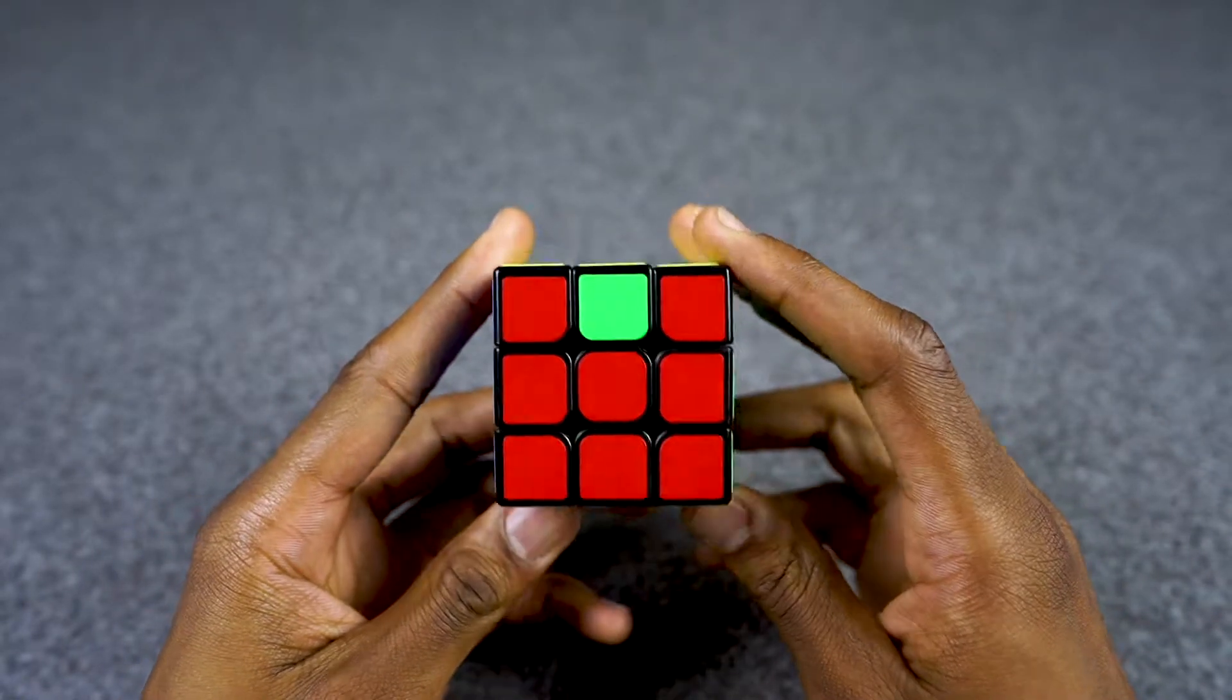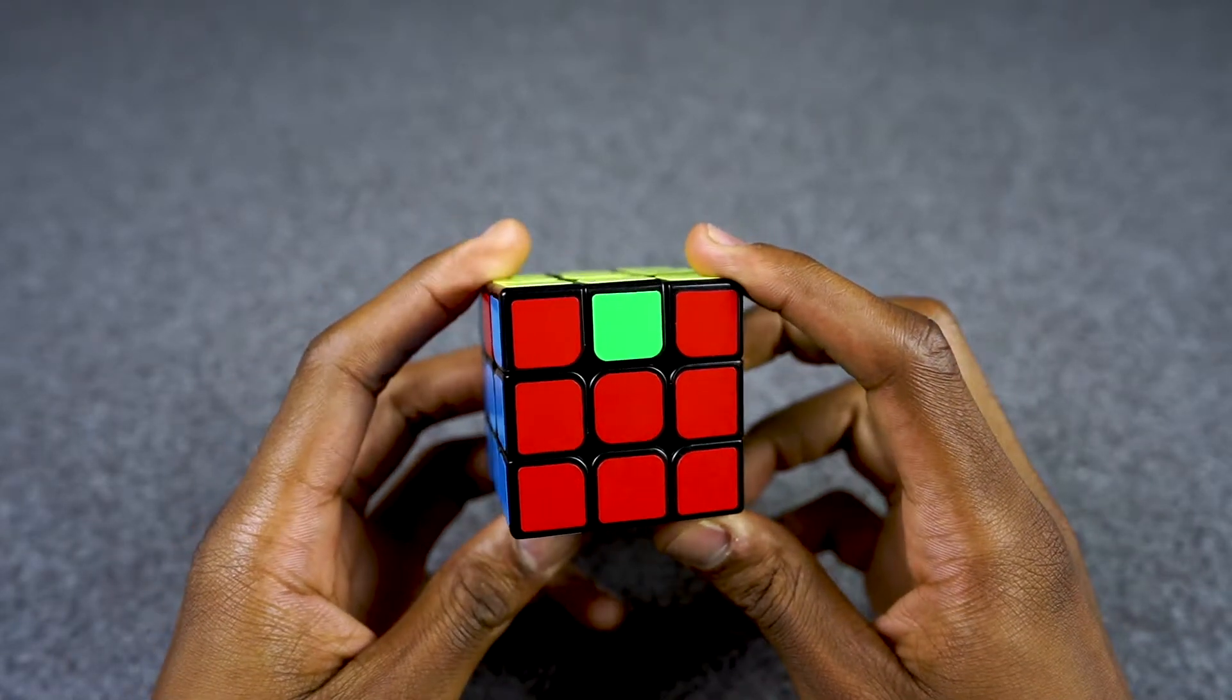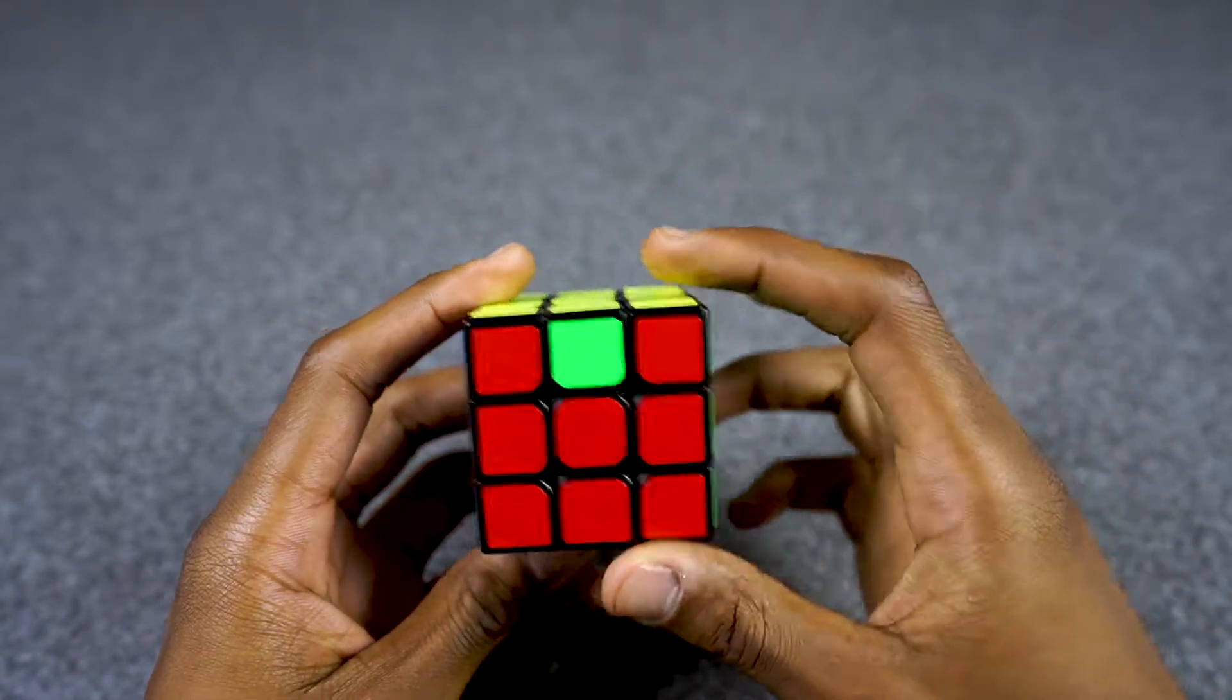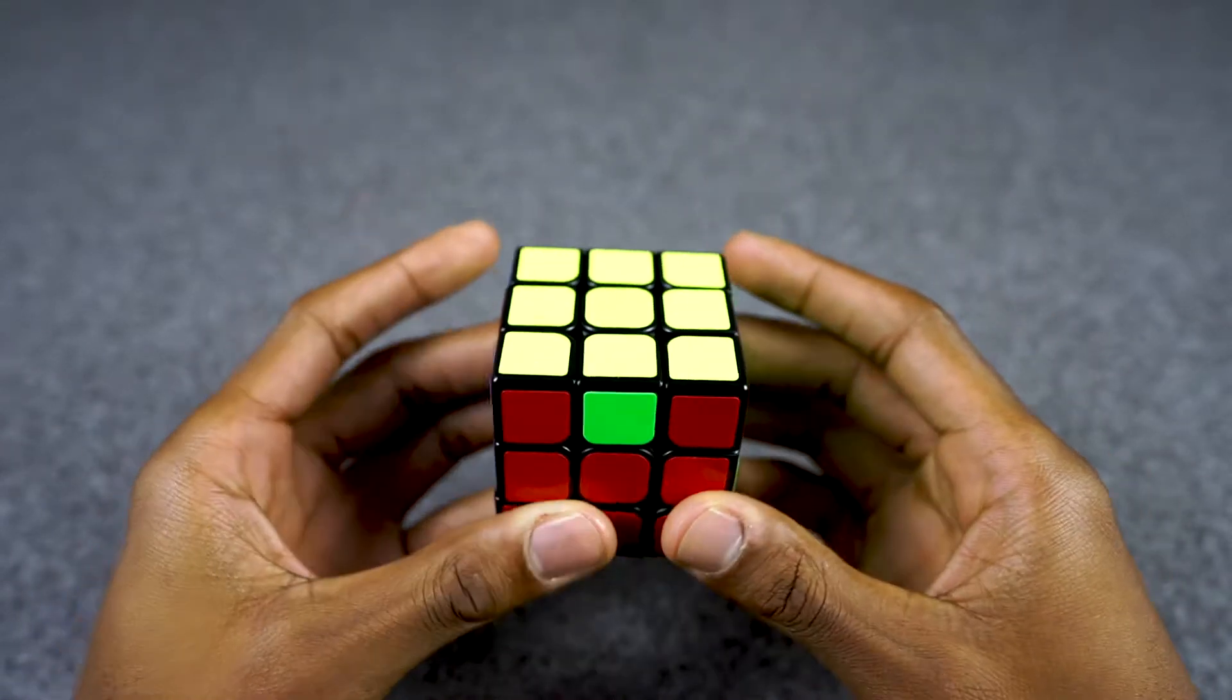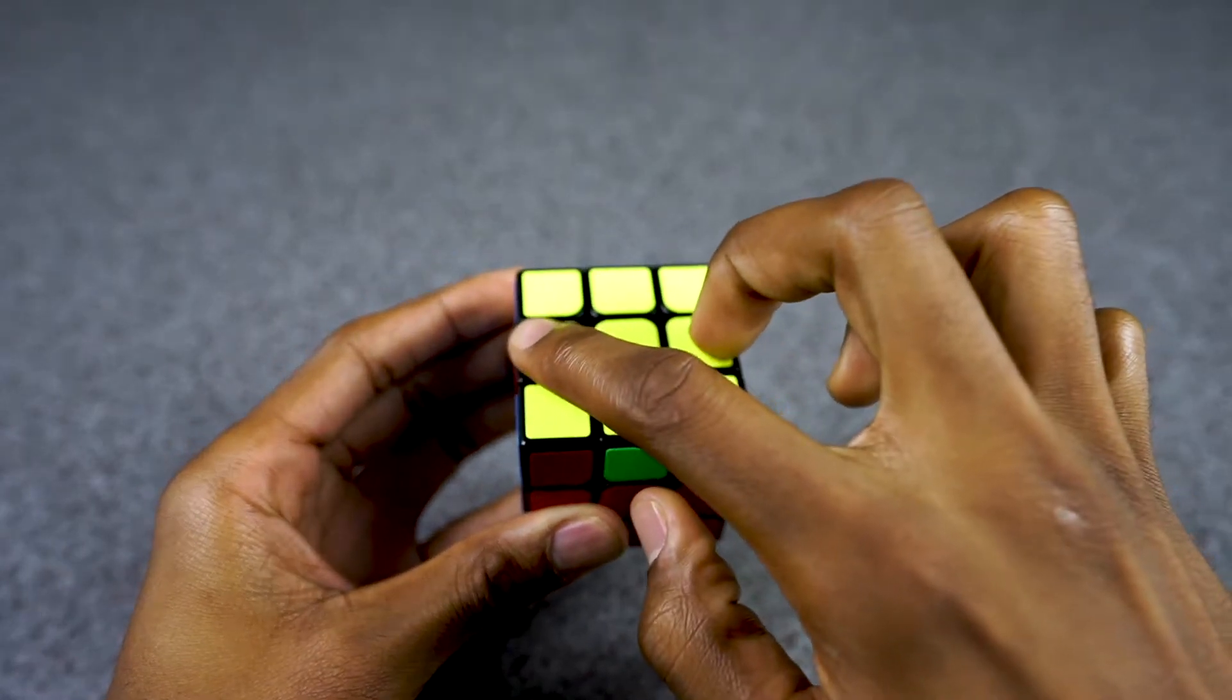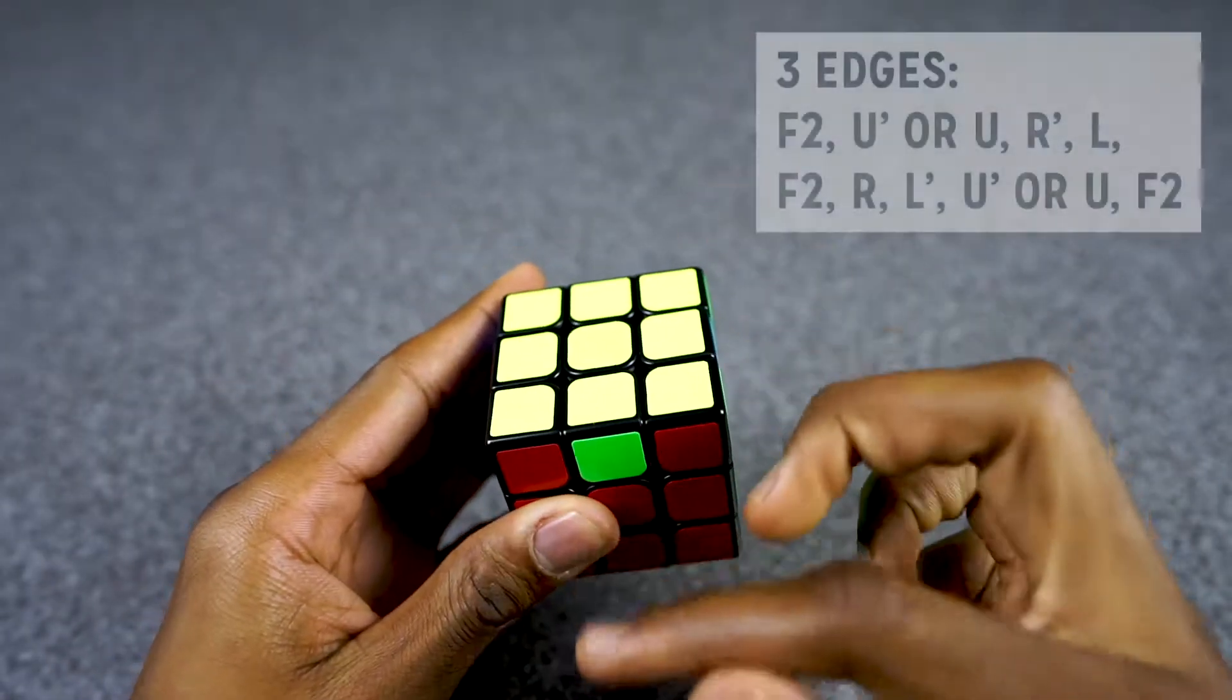The last algorithm is going to be an intuitive one. It kind of depends on what the situation is, and I'll show you what I mean by that in a second. The algorithm starts with us having two of the non-solved edge pieces on the left and right.